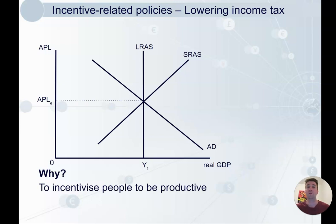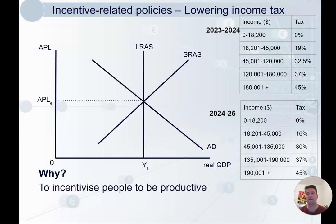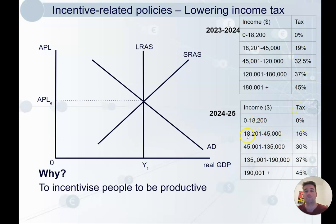Lowering income tax is also going to increase incentives. As of the first of July 2024, the new tax rates mean: zero percent on income up to the threshold, then 16 percent (down from 19 percent) on income between $18,200 and $45,000, giving a tax cut to everyone who earns above $18,200. The next bracket falls from 32.5 percent to 30 percent.